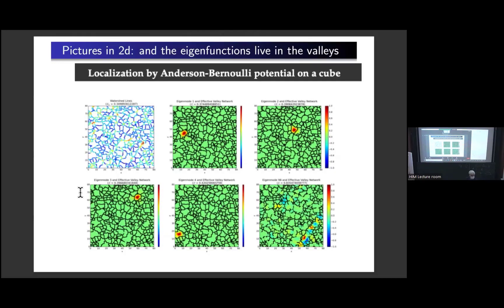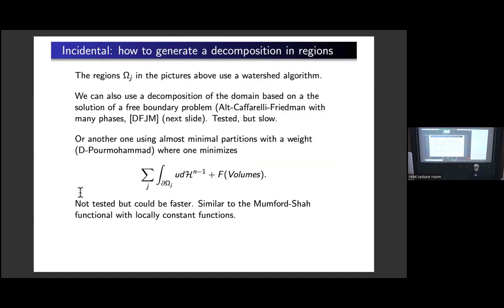The first picture is the 2D potential. The other pictures are various eigenfunctions: the first eigenfunction, second, third, four and five, and then number 98. After 98, it starts not being so clearly localized in the initial grid. It's a proof by picture that eigenfunctions tend to localize in the valleys of the effective potential. We still don't fully understand why it works so well on the pictures — better than what we can prove.